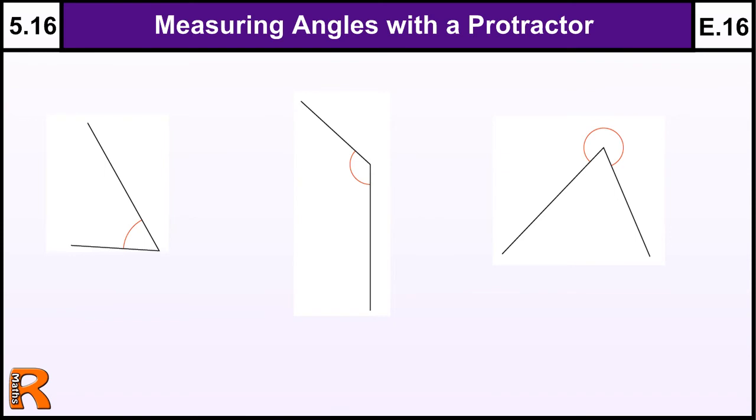Measuring angles with a protractor, Level 5, Grade E. Something that most secondary school teachers think students should have mastered at primary school, but they very rarely do. Some do, some don't.